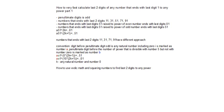Let's start with another approach here. The penultimate digit is any natural number. The digit before the penultimate digit of the initial number is marked as A. The penultimate digit before the number of the power is divisible with number K.